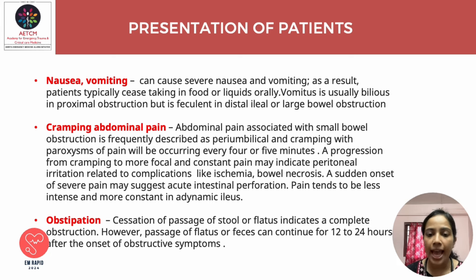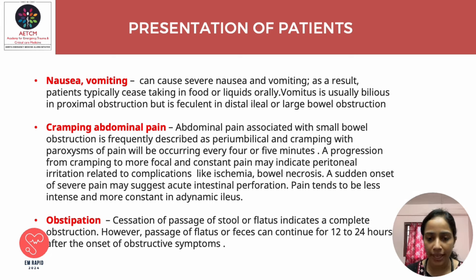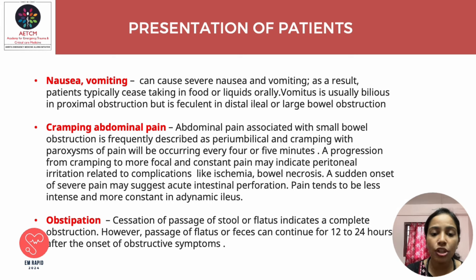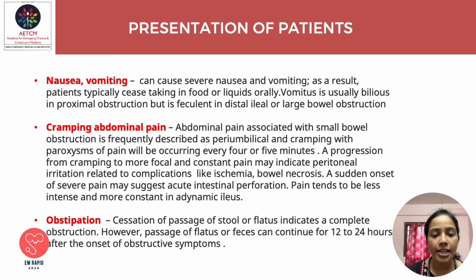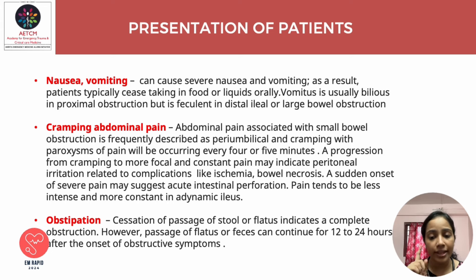The second symptom is cramping abdominal pain, always associated with small bowel obstruction. It is typically periumbilical and cramping, with paroxysms of pain occurring every four to five minutes. A progression from episodic to constant pain should raise suspicion for peritoneal irritation related to complications like bowel ischemia and necrosis. A sudden onset of severe pain may suggest acute intestinal perforation. In adynamic ileus, pain is less intense and more constant.